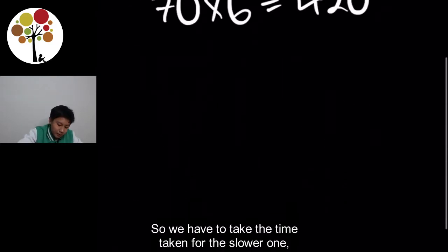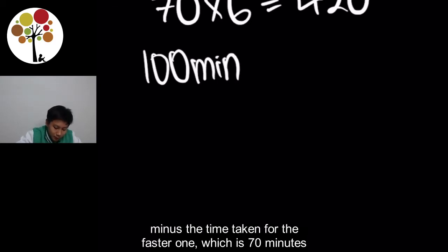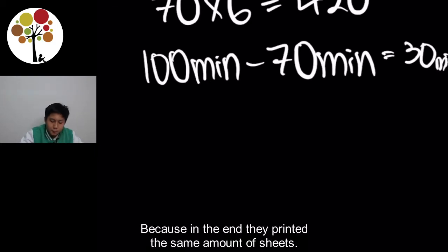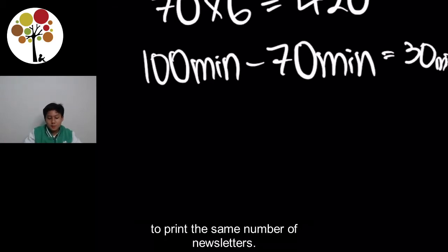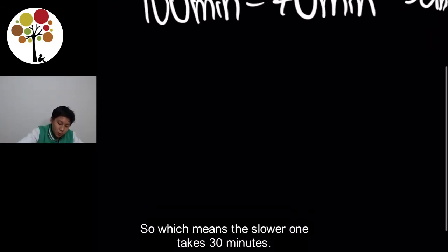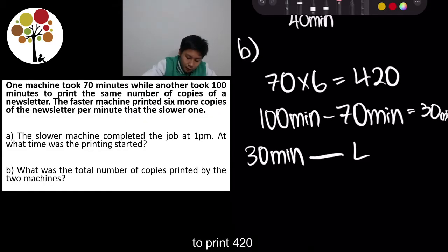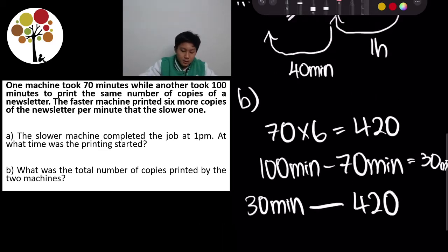We take the time for the slower machine — 100 minutes — minus the time for the faster one — 70 minutes — to get 30 minutes. Because in the end, they printed the same number of sheets; that's why the slower one took longer. This means the slower machine takes 30 minutes to print 420 copies.